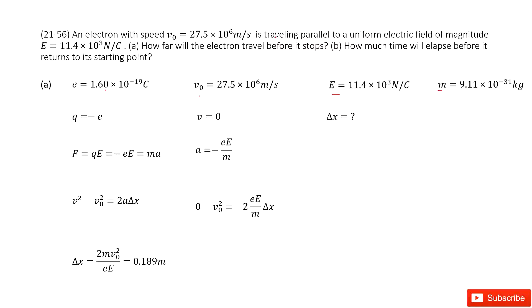And ask you how far will this electron travel before it stops. So key word: before it stops tells us the final speed is zero. We need to find the delta x.